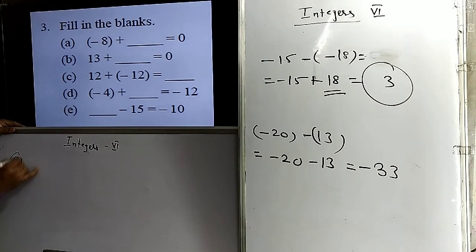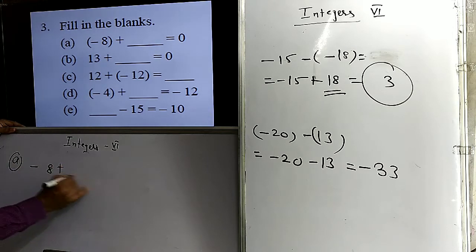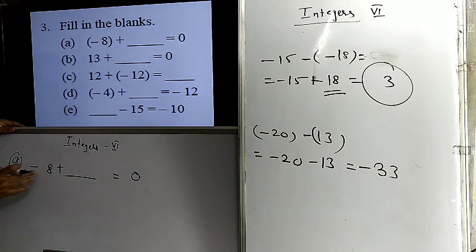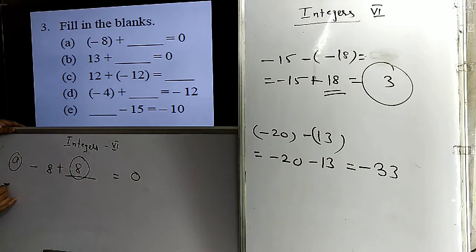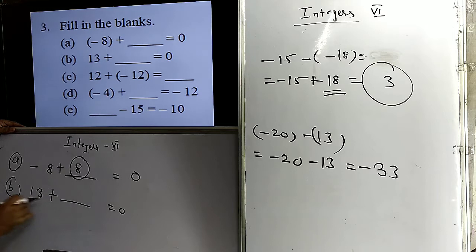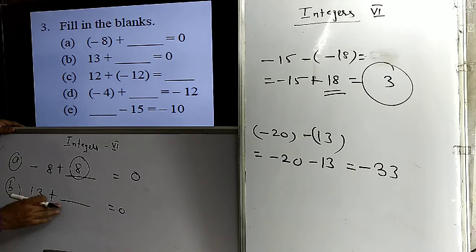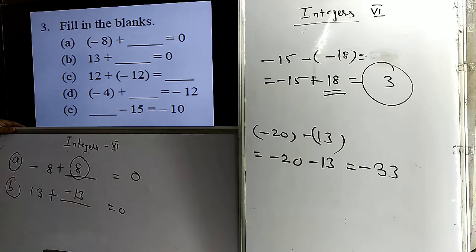The first fill-in problem is minus 8 plus what equals 0. The additive inverse of minus 8 is 8, so 8 plus minus 8 equals 0. The answer is 8. The next problem is 13 plus what equals 0. If we add the additive inverse of 13, which is minus 13, then 13 minus 13 equals 0. So the second value is minus 13.